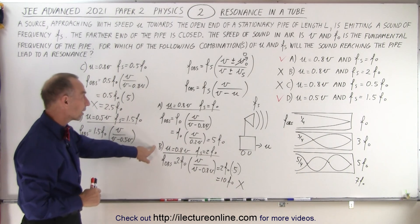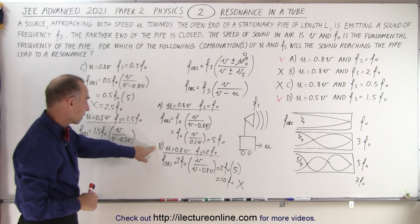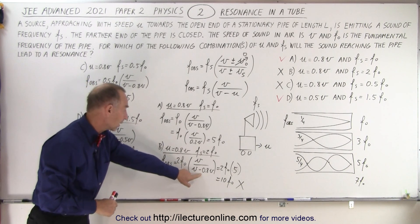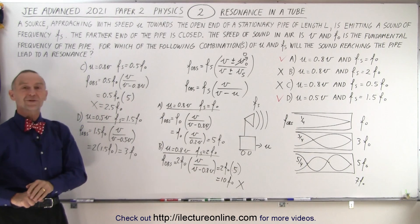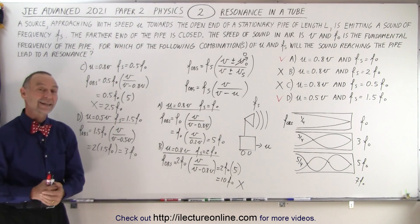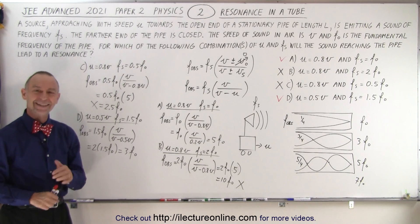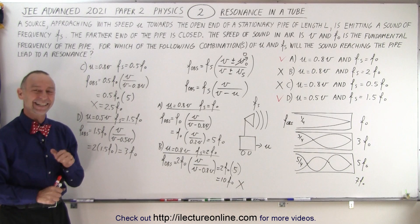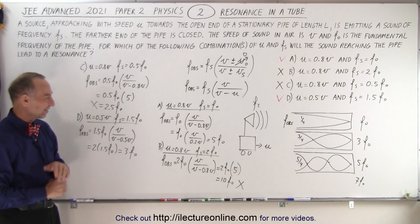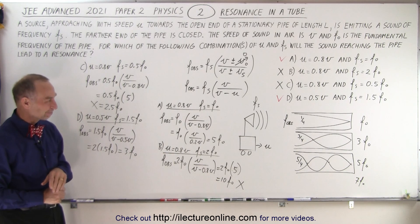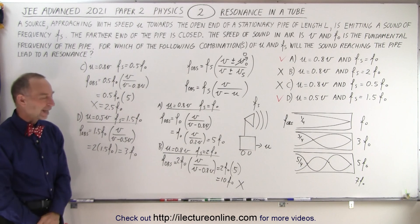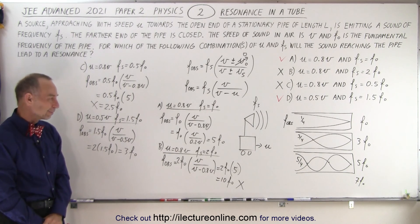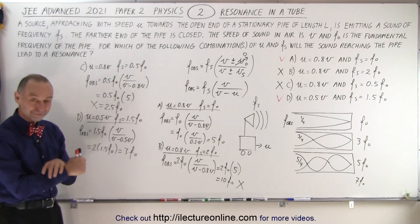Let me just verify: for B, 2 times f sub nought at 0.8 gives a factor of 5, so 10f sub nought — not a resonance. For C, 0.5 times 5 gives 2.5f sub nought — not a resonance. So two answers are correct and two are not. The solution took about eight and a half minutes; you'd need to get this done in about three minutes on the actual exam. You can cut time by quickly plugging in the values, but it does take some practice.